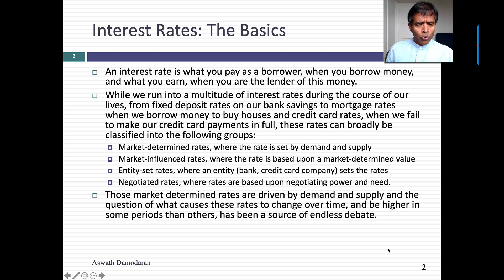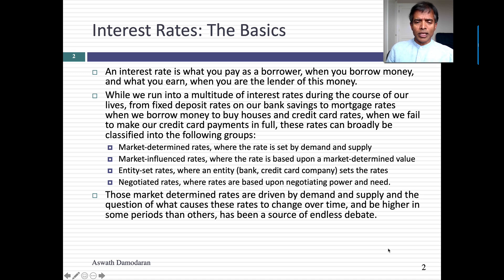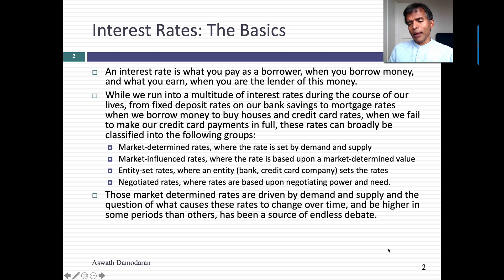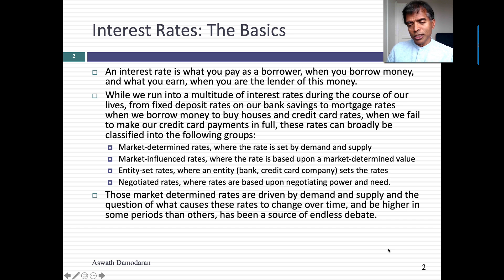It's easy to get confused about where these rates come from, why they're different, and why they move in different directions. Broadly speaking, you can put interest rates into four groups. The first are market-set rates, or market-determined rates, set by demand and supply. The rate you earn on commercial paper, a T-bill, or a T-bond is a market-set rate.